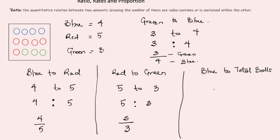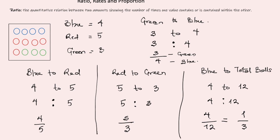For blue to total number of balls: blue is 4, total is 12, so 4 to 12 or 4 over 12. This introduces the concept that ratios can be reduced just like fractions. There is a common factor of 4 between 4 and 12, so we can reduce this to 1 over 3. Saying the ratio of blue balls to total is 4 to 12 is the same as 1 to 3 — for every one blue ball, there are three total balls.